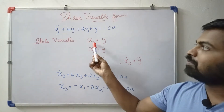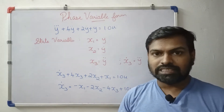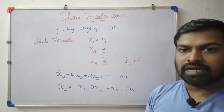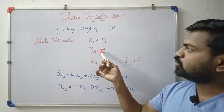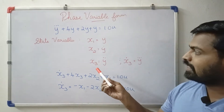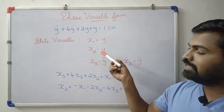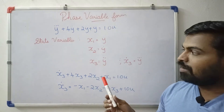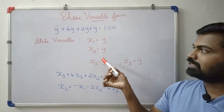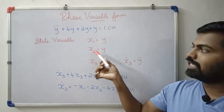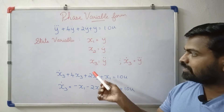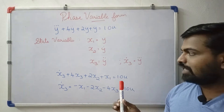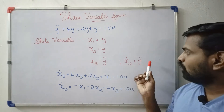The first part of the phase variable form: x1 is equal to y. Now we have the next variable: x2 is equal to y-dot, and x3 is equal to y-double-dot. Now we have the state variables x1, x2, and x3.